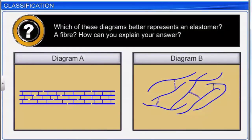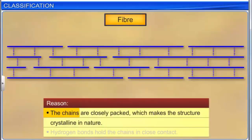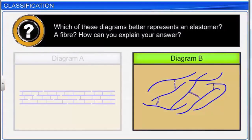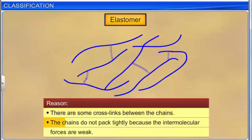Diagram A represents a fiber, where the chains are closely packed, making the structure crystalline in nature. Hydrogen bonds hold the chains in close contact. Diagram B represents an elastomer, where there are some cross-links between the chains, but the chains do not pack tightly because the intermolecular forces are weak.